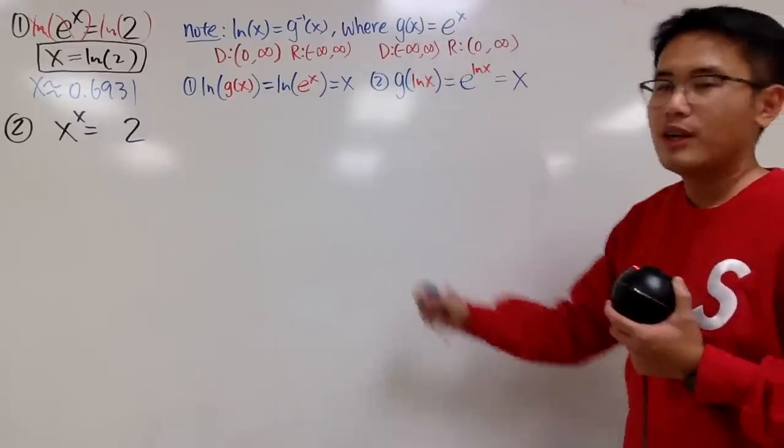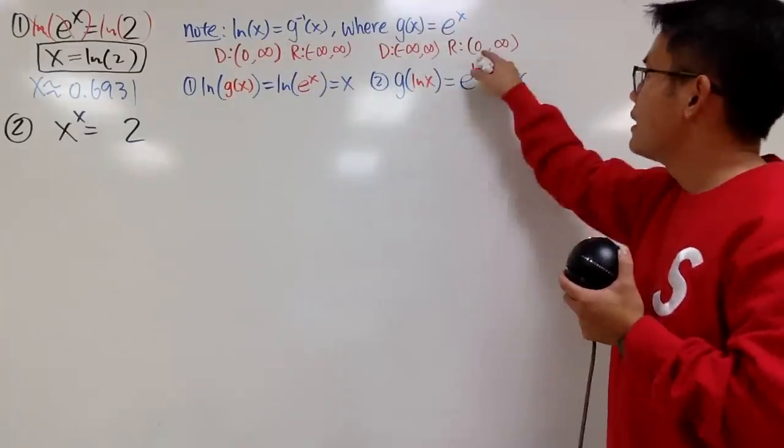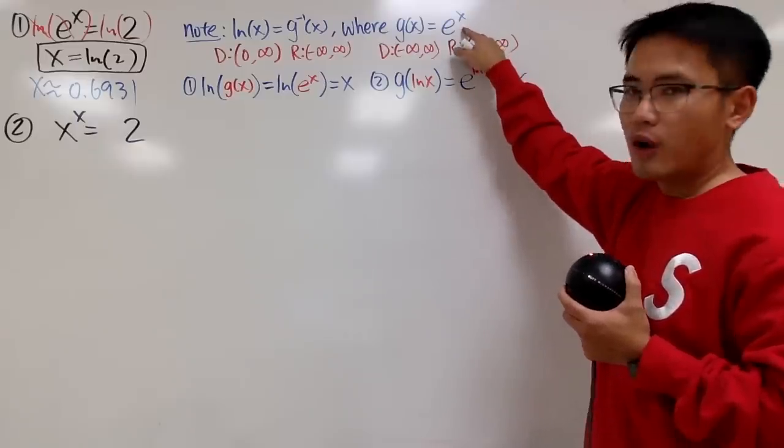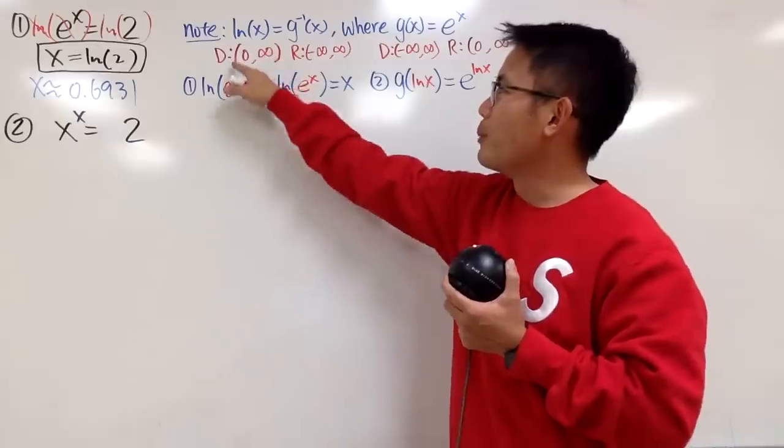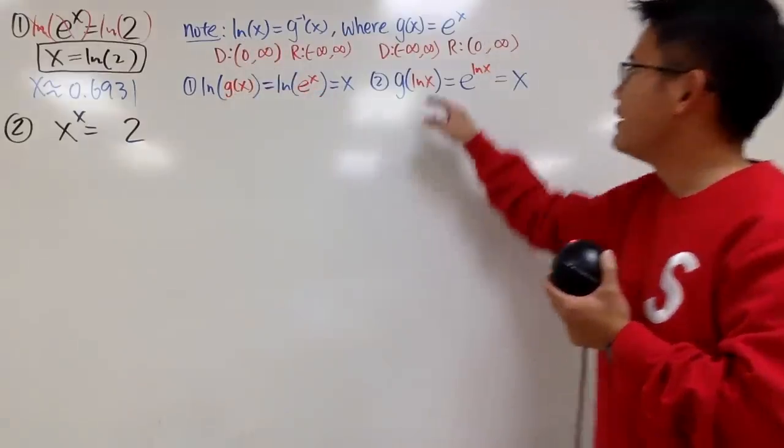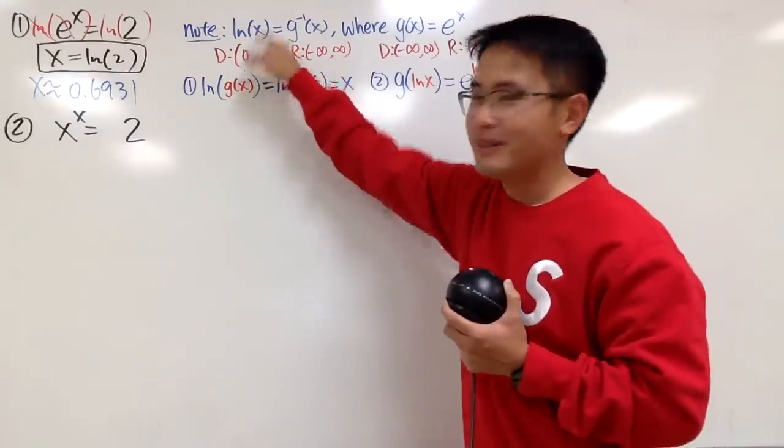Once you have this information, to get the domain and the range of the inverse, it's not that bad at all. Because the range of the original is the domain of the inverse. So the domain of ln x is this, and then the domain of the original is the range of the inverse.